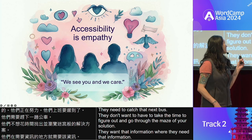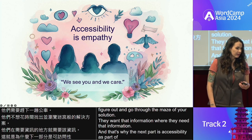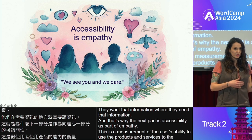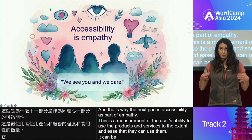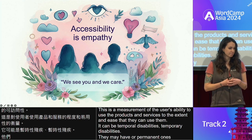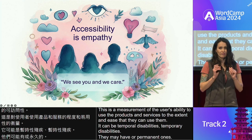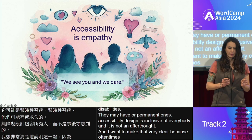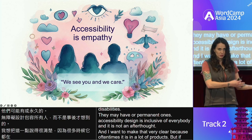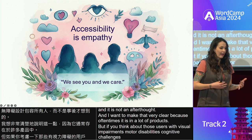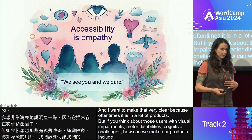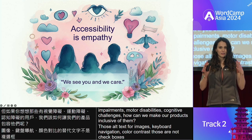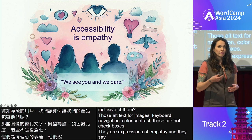Accessibility is part of empathy — it's a measurement of the user's ability to use products and services to the extent and ease that they can. It covers temporary or permanent disabilities. Accessibility design is inclusive of everybody and it is not an afterthought. For users with visual impairments, motor disabilities, or cognitive challenges, alt text for images, keyboard navigation, and color contrast are not checkboxes — they are expressions of empathy that say 'we see you and we care.'